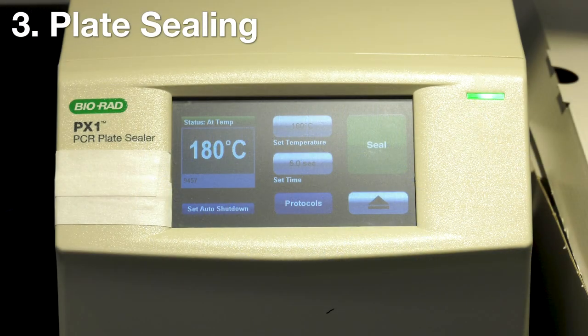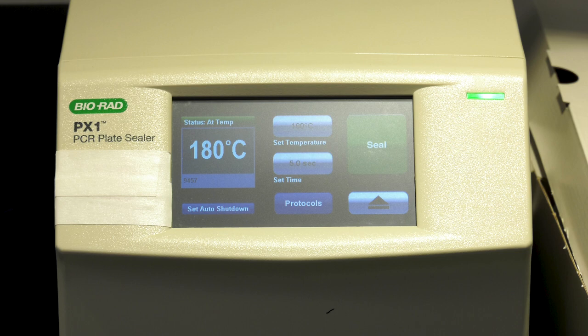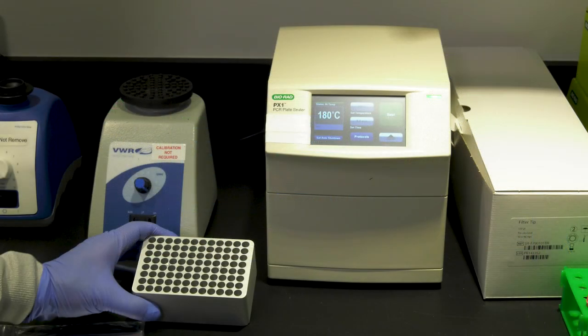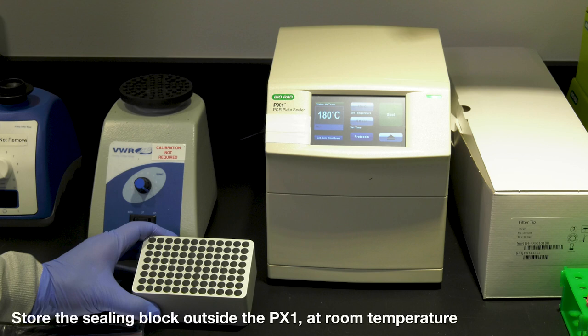We will be using the PX1 PCR plate sealer to seal our plate. For all digital PCR applications and the QX200 workflow, you should have the same settings for plate sealing, which are 180 degrees Celsius for 5 seconds. Before starting, it's important to ensure that the sealing block is at room temperature and not stored inside the sealer.